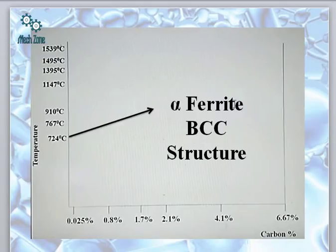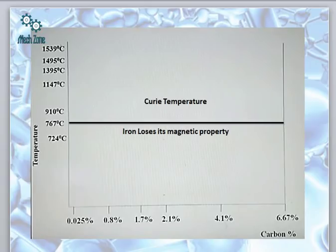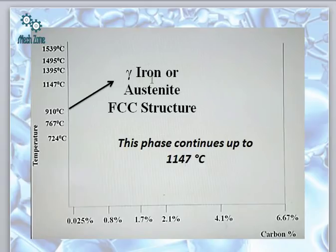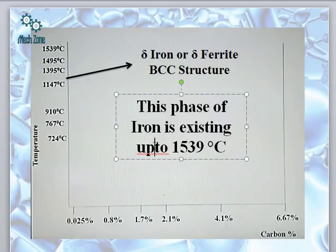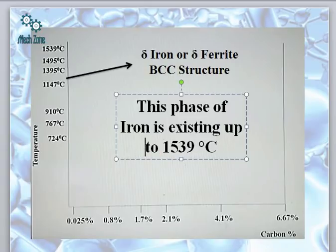So we saw that alpha ferrite has BCC structure, then gamma iron has FCC structure, and again delta iron also has BCC structure. This delta iron or delta ferrite phase exists up to 1539 degrees centigrade.